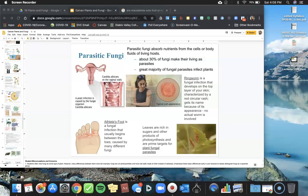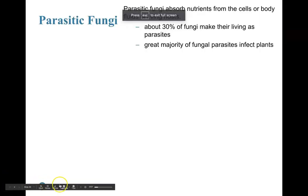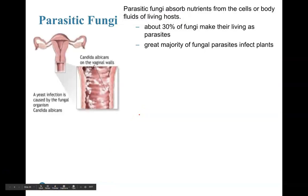Let's go over specific examples. The first is a yeast infection caused by the fungal organism Candida albicans — a common vaginal yeast infection. The vaginal canal has commensal relationships between yeast and bacteria, but it's when there's an overgrowth of this organism that issues arise, with symptoms detrimental to the host, such as itchiness, redness, and soreness.